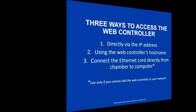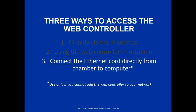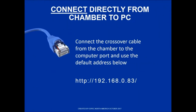The third way, and not recommended, is connecting directly from your computer to the chamber using a crossover cable. This should only be used if you cannot add the web controller to your network. The web controller ships configured to connect via DHCP. If this cannot be done, the web controller will fall back to using the static IP 192.168.0.83.